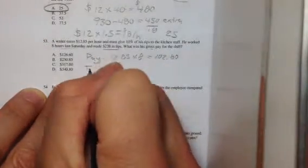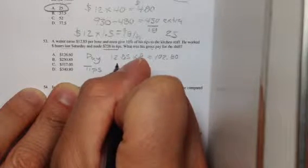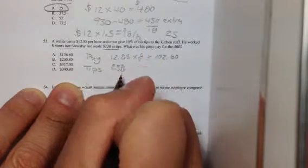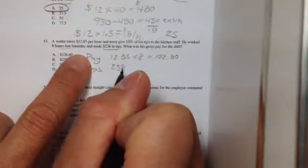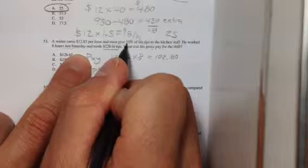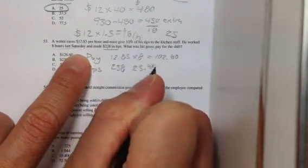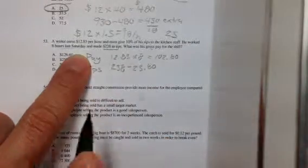And his tips, if he didn't have to pay anything to the kitchen staff, would just be $238. But he has to give away 10%. And we know that 10% of $238 would just be 0.10 times $238, which would be $23.80. So you can subtract that off,